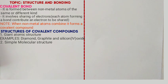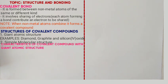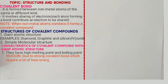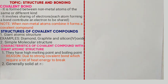Compounds with giant atomic structure have two properties. One, they have high melting and boiling points — due to strong covalent bonds between atoms, which require a lot of heat energy to break. Number two, they are solid at room temperature, again due to strong covalent bonds.